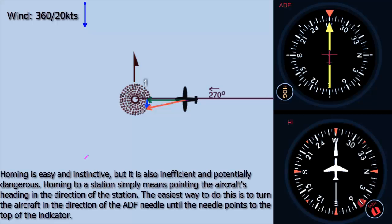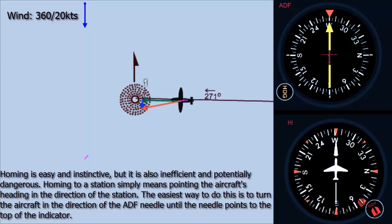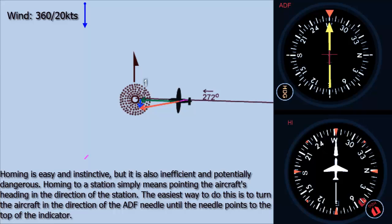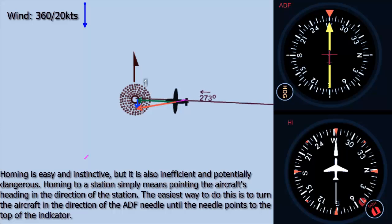Homing is easy and instinctive, but it's also inefficient and potentially dangerous. Homing to a station simply means pointing the aircraft heading in the direction of the station. The easiest way to do this is to turn the aircraft in the direction of the ADF needle until the needle points to the top of the indicator.